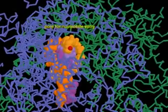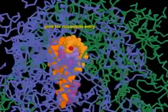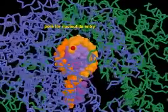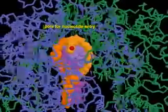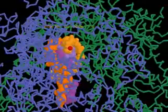A pore on the backside of RNA polymerase II extends from the protein surface all the way to the active site. The nucleotide triphosphates used to build the growing RNA transcript enter the polymerase through this pore.